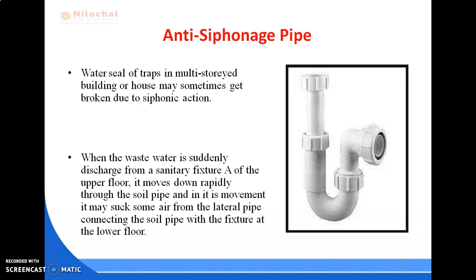Next is the anti-siphonage pipe. The water seal of traps in a multi-storied building may sometimes get broken due to siphonic action. When wastewater is suddenly discharged from a sanitary fixture on an upper floor, it moves down rapidly through the soil pipe and in its movement may suck some air from the lateral pipe connecting the soil pipe with the fixture at the lower floor.